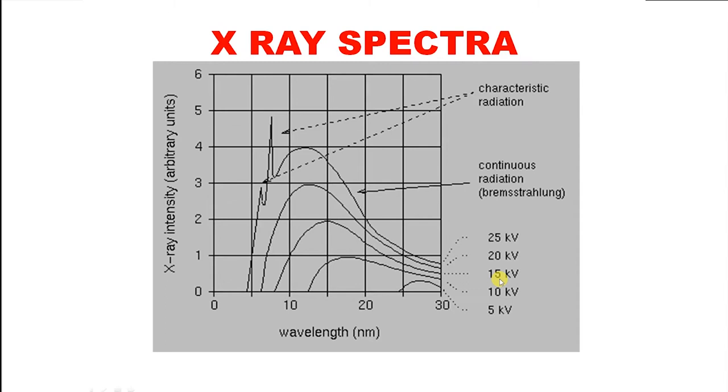Similarly, for another accelerating potential 15 kilovolt, a similar graph is obtained. Intensity gradually increases, reaches the peak value, then it starts decreasing. Now you see that at a very high potential, say 25 kilovolt, the nature of the graph is slightly different.